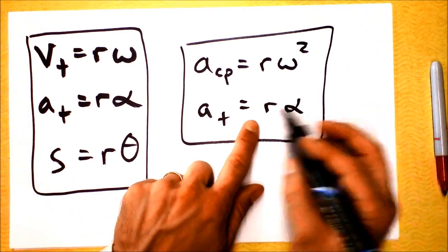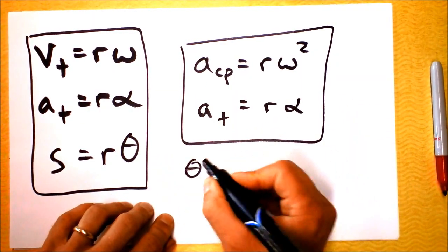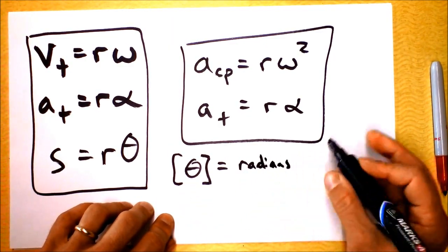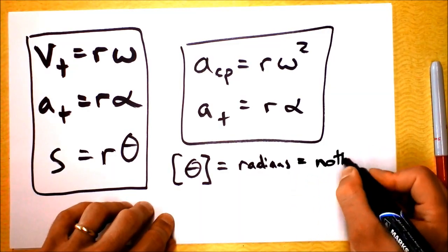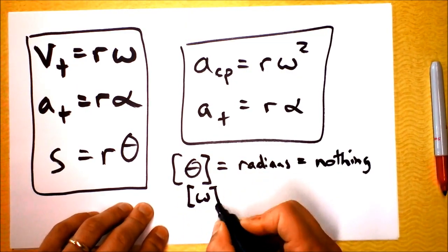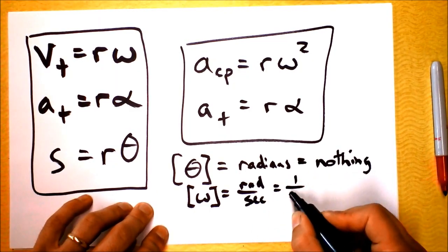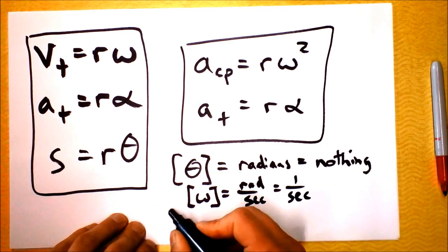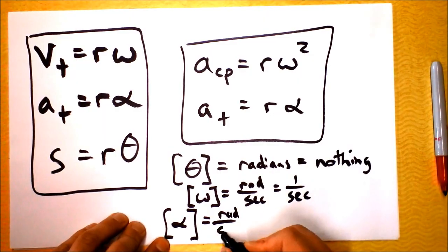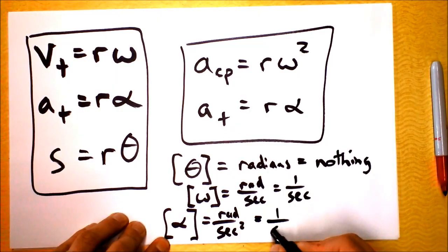The units are interesting: units for θ are radians, which are essentially unitless. Units for ω are radians per second, which is the same as 1/s since radians don't really exist. Units for angular acceleration α are radians per second squared, which is likewise 1/s².